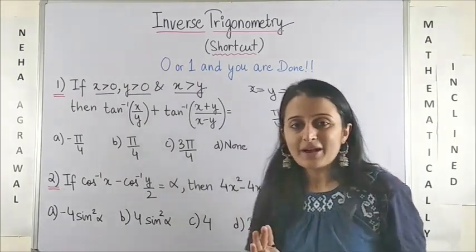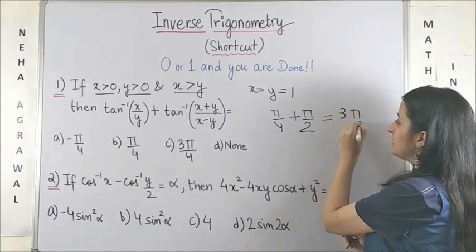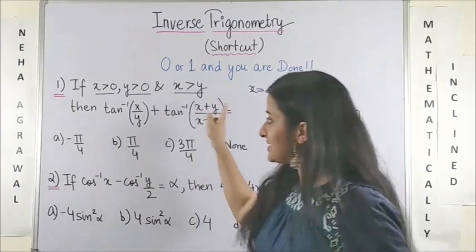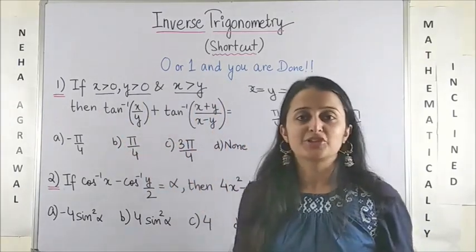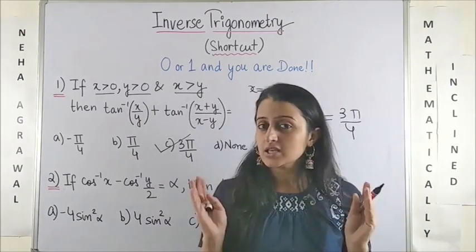Thus, pi by 4 plus pi by 2, when you take the LCM, this ends up giving you 3 pi by 4. That means the answer to this expression is 3 pi by 4 which is clearly given over here. Wasn't this easy?